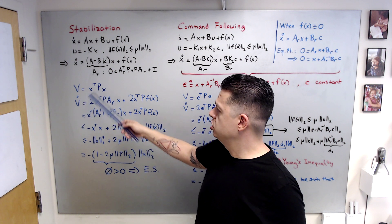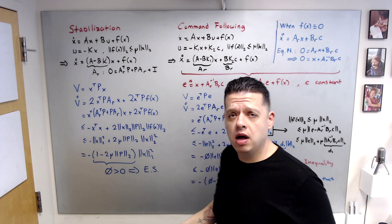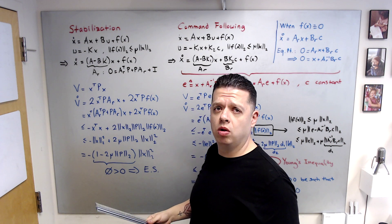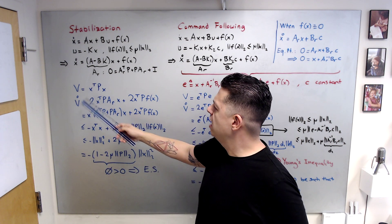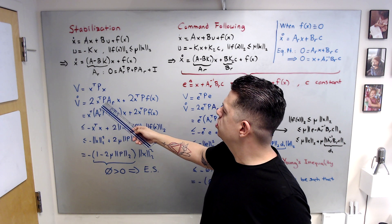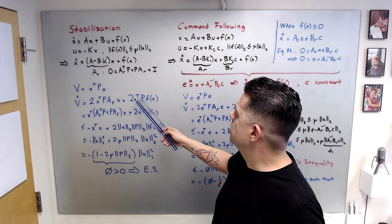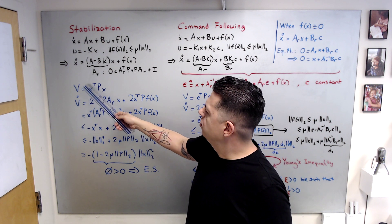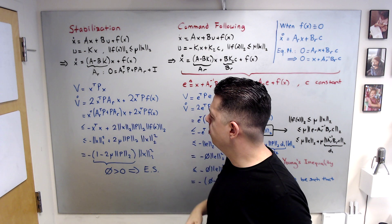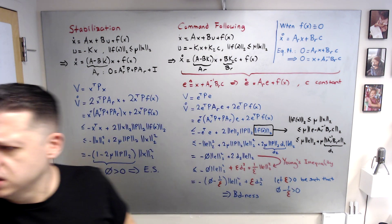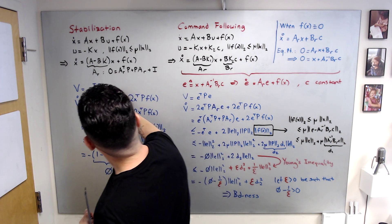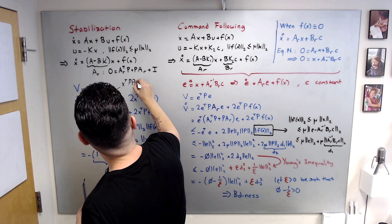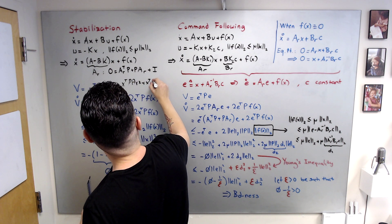This Lyapunov function is positive definite, regular, and unbounded; V(0) = 0, so it satisfies all the important properties. V-dot equals 2x^T P (A_R x) + 2x^T P f(x). I can expand this: writing x^T P A_R x plus x^T P A_R x, and since a scalar equals its transpose, we rewrite one term using A_R^T P.